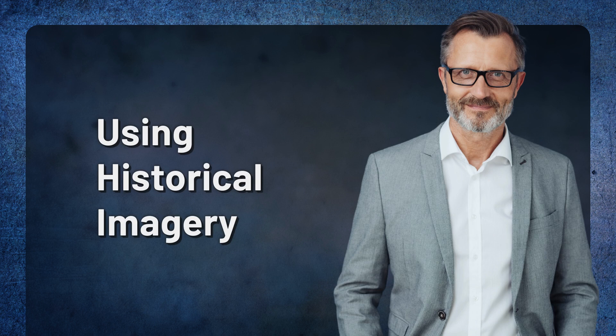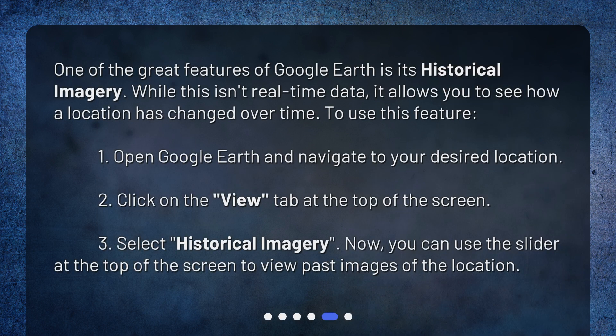Using historical imagery. One of the great features of Google Earth is its historical imagery. While this isn't real-time data, it allows you to see how a location has changed over time. To use this feature: 1. Open Google Earth and navigate to your desired location. 2. Click on the View tab at the top of the screen. 3. Select Historical Imagery. Now, you can use the slider at the top of the screen to view past images of the location.